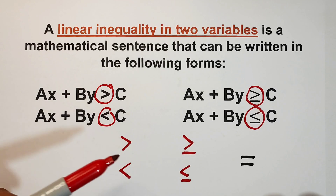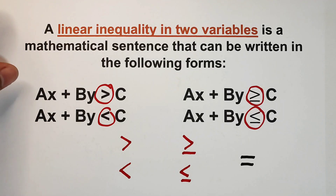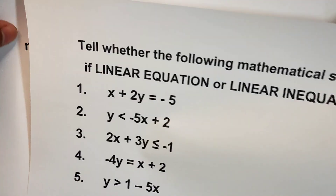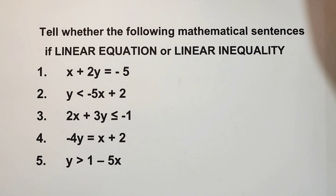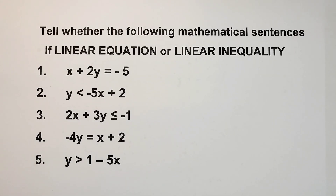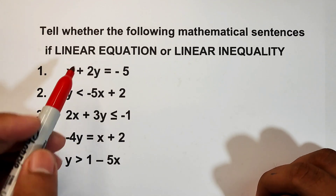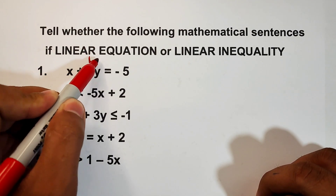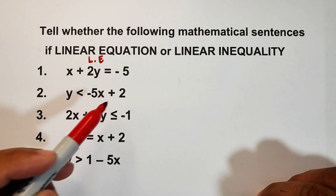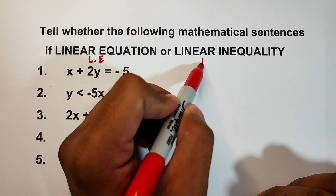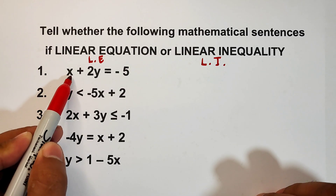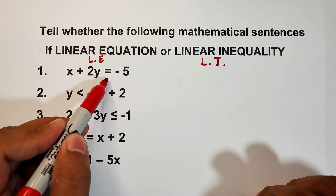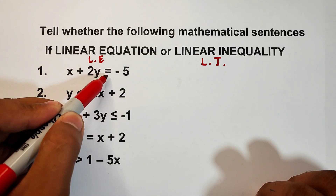Let's move on to the next activity. After defining, let us now determine whether the following mathematical sentences are linear equations or linear inequalities. Write LE if it is a linear equation and LI if it is a linear inequality in two variables. Number one: x plus 2y is equal to negative five.